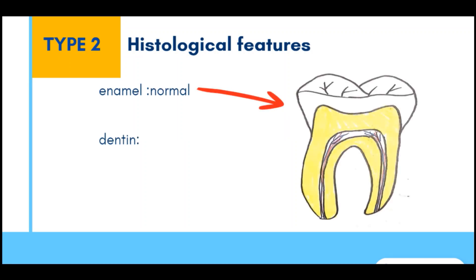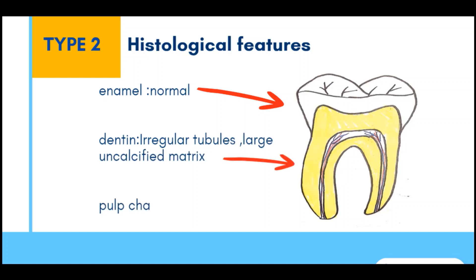Histologically, enamel is normal except for its peculiar shade. Dentine is abnormal with irregular tubules and large areas of uncalcified matrix. The pulp chamber is obliterated due to continued deposition of dentine.